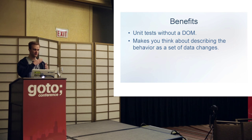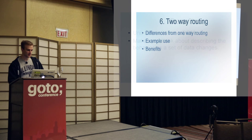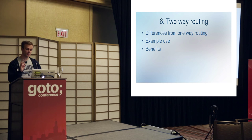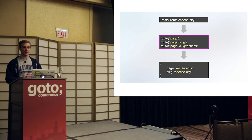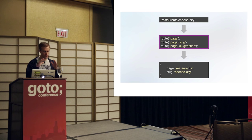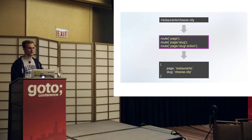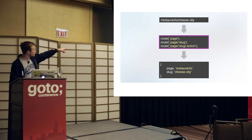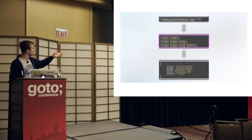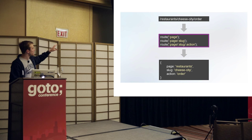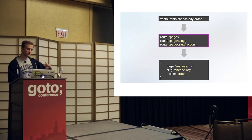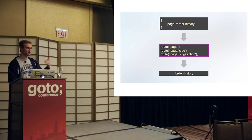If you figure out the stateful properties of your view model, test them, the implementation becomes easier and then your templates become super straightforward. Number six: two-way routing. I'll explain the difference between two-way and one-way routing, give an example use case, and talk about the benefits. Everyone's familiar with one-way routing, especially from the server-side world: you take in URLs, they go through routing rules, and you get some data back. So if you had restaurants/cheese-city, it goes through these routing rules and you get that data object back.